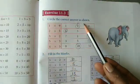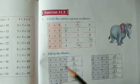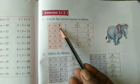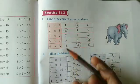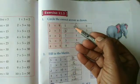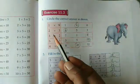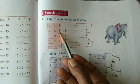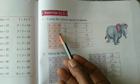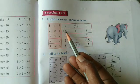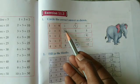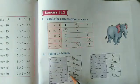First, circle the correct answer as shown. 1 × 9 equals 9, so I am circling 9. 2 × 3 equals 6. 2 ones are 2, 2 twos are 4, 2 threes are 6, so I am circling 6.